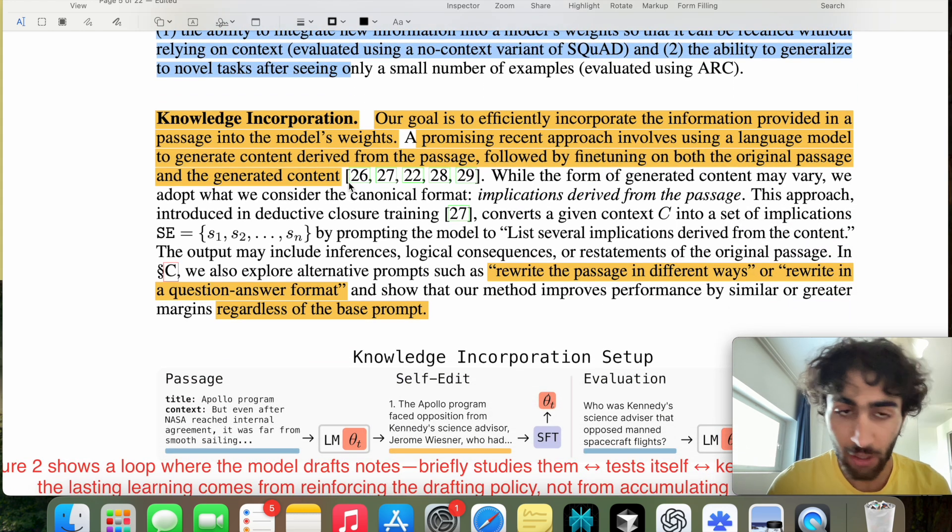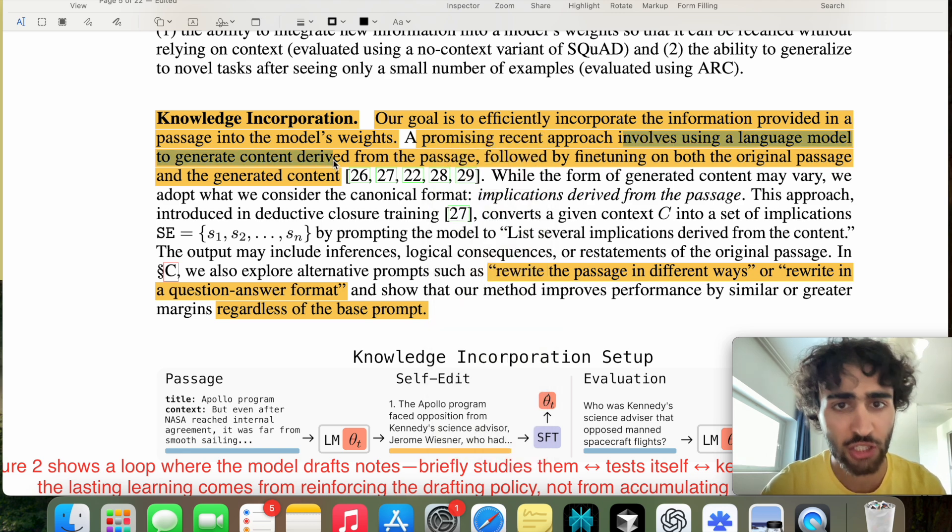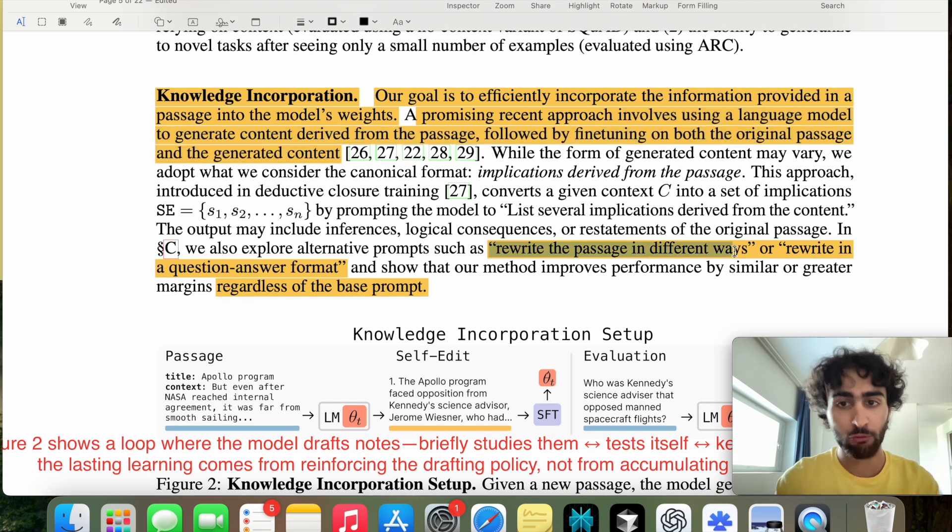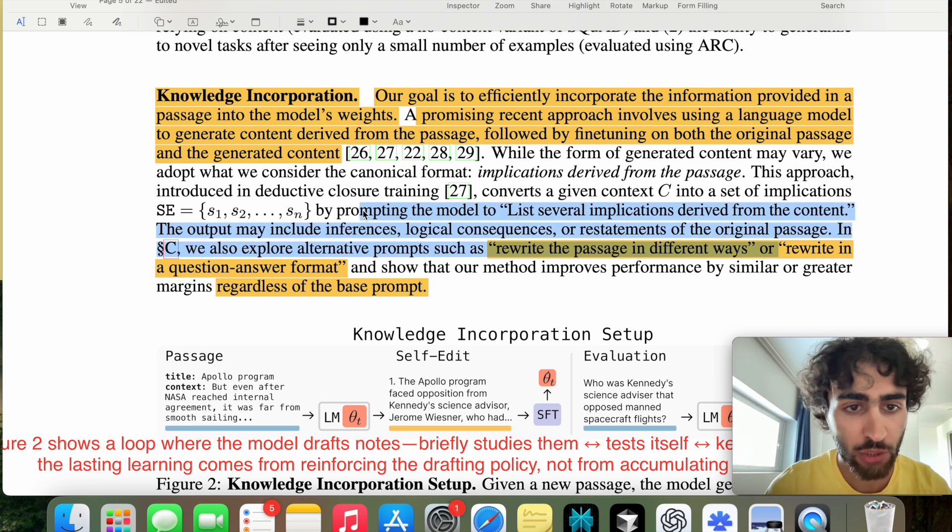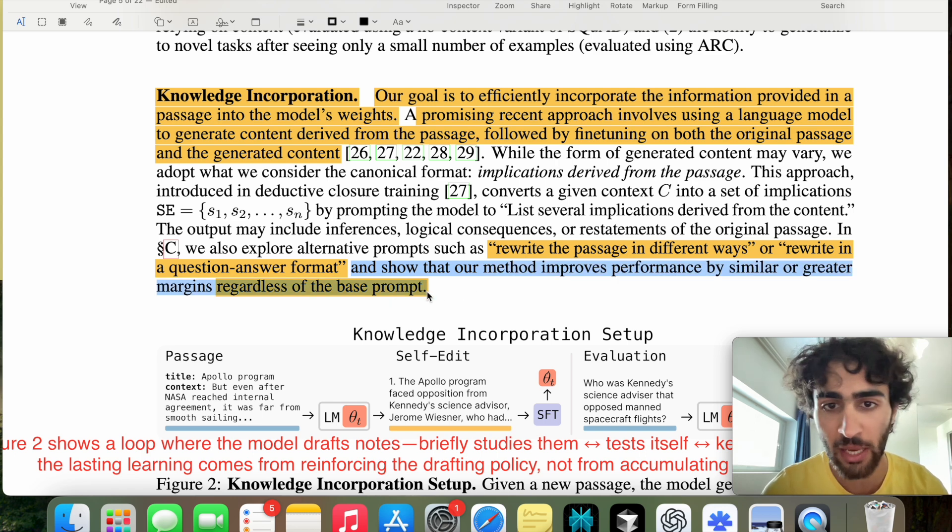Let's start with knowledge incorporation. So the goal is to efficiently incorporate the information in the model's weights from a passage. And a promising recent approach uses a large language model to generate content derived from the passage followed by fine-tuning on both the original passage and the generated content. This is to say that the LLM will interpret the context in its own way and then supervise fine-tune on that. For example, it could just literally say rewrite the passage or rewrite it in a Q&A format.